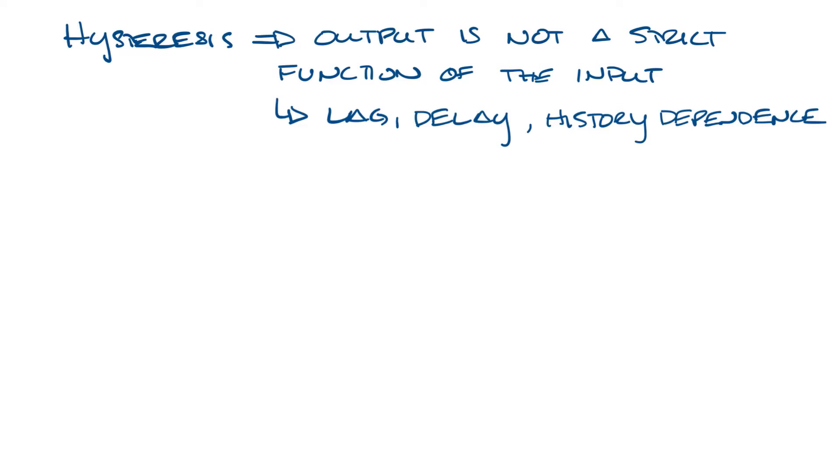So it's easier if I draw it for you. Hysteresis looks kind of like this. Basically, as A increases, B increases along this curve, but then when A decreases, B decreases along this other curve. So they're not just right on top of each other. There's a lag in the output of B when the A decreases compared to when it increased.